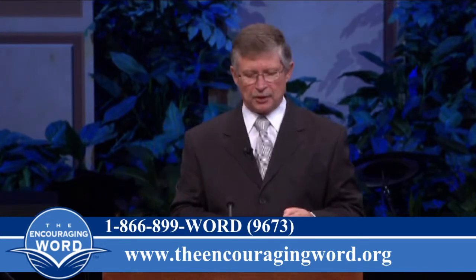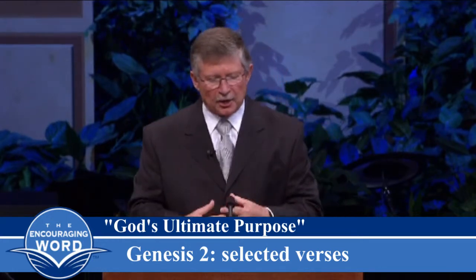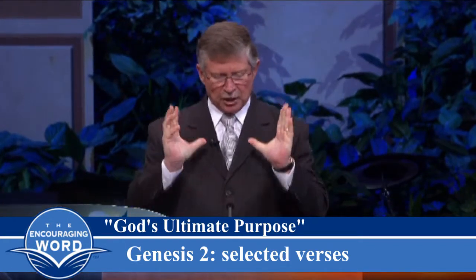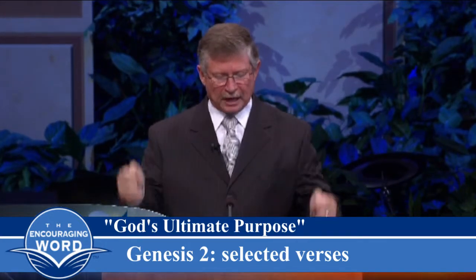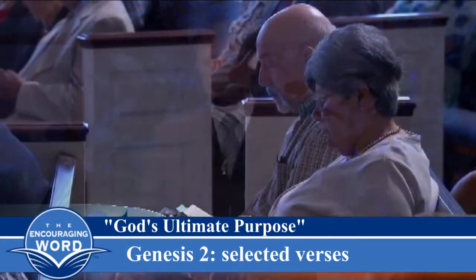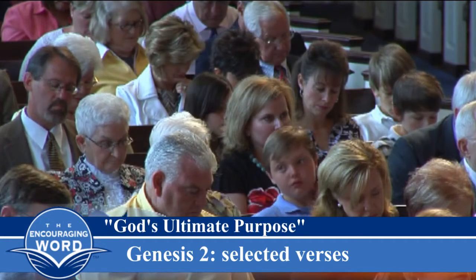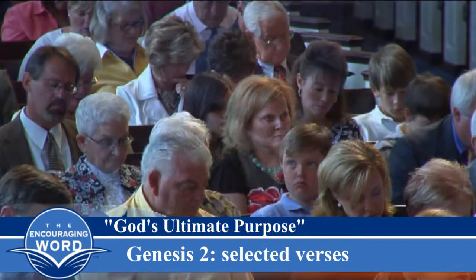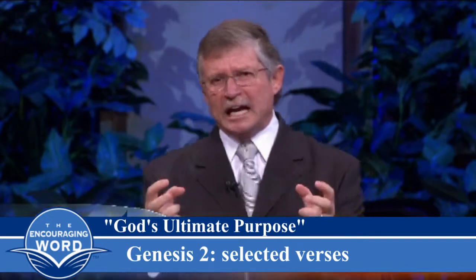Let's go to chapter 2, verse 1. Thus the heavens and the earth were completed in all their vast array. Verse 4: This is the account of the heavens and the earth when they were created. When the Lord made the earth and the heavens, and no shrub of the field had yet appeared on the earth, and no plant of the field had yet sprung up. For the Lord God had not sent rain on the earth, and there was no man to work the ground, but streams came up from the earth and watered the whole surface of the ground. The Lord God formed man from the dust of the ground and breathed into his nostrils the breath of life, and man became a nephish kaiyah — a living being.